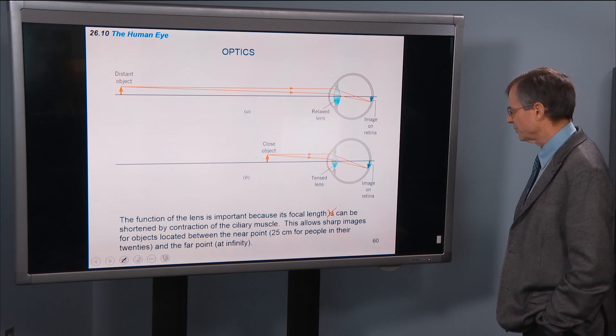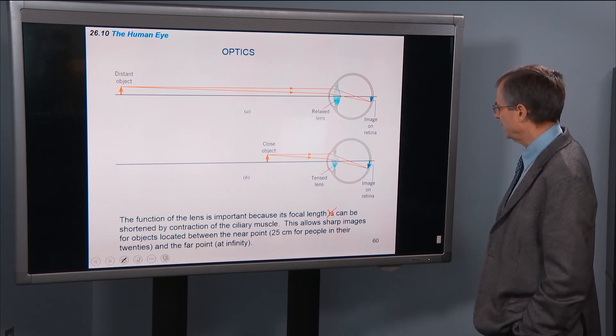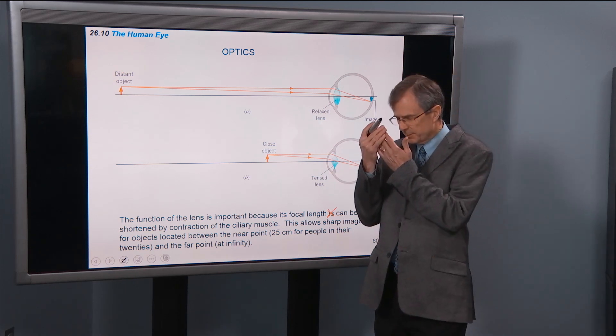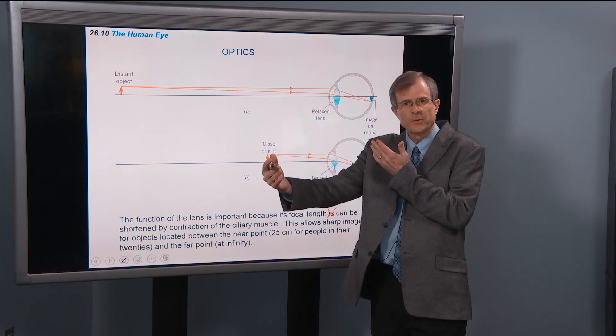just 25 centimeters for people in their 20s, and the far point at infinity. So the near point is the distance from your eye at which you can come to focus.